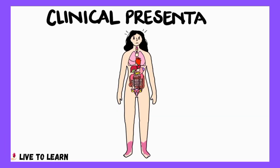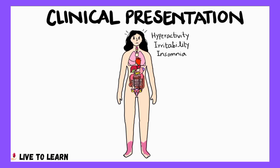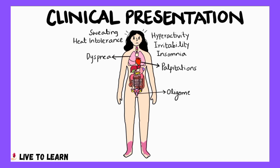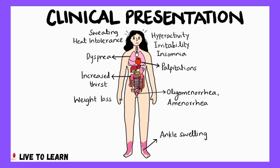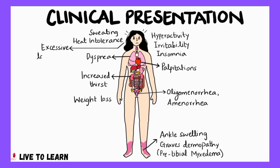Patients with Graves' disease usually present with hyperactivity, irritability, and insomnia. They may complain of sweating, heat intolerance, palpitations, dyspnea, oligomenorrhea or amenorrhea, increased thirst, weight loss, ankle swelling, and Graves' dermopathy, which involves raised pink or purplish plaques on the foot, also known as pretibial myxedema. Patients may also complain of excessive lacrimation due to Graves' ophthalmopathy.